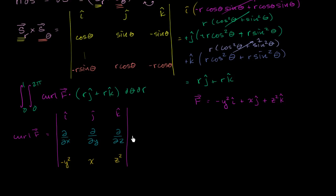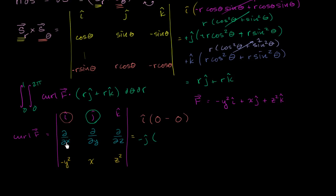This is going to be equal to i times the partial of z squared with respect to y. Well, z squared is just a constant with respect to y, so that partial is just 0. It's just going to be 0, minus the partial of x with respect to z — that's also just a constant in terms of z, so that's 0 as well. Then minus j — we need our checkerboard pattern, so we put a negative in front of the j. The partial of z squared with respect to x is 0, and the partial of negative y squared with respect to z is 0 again.